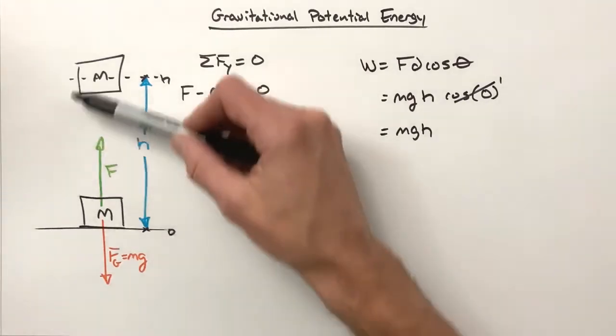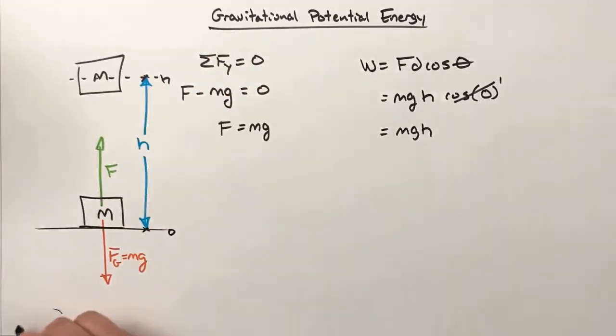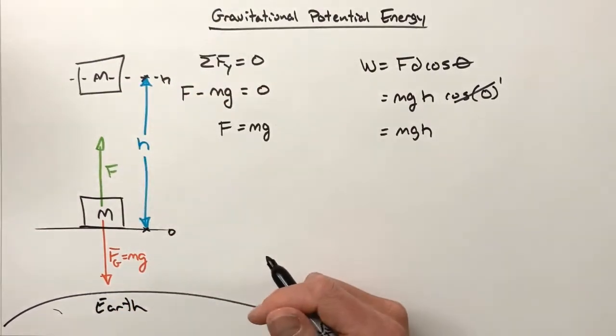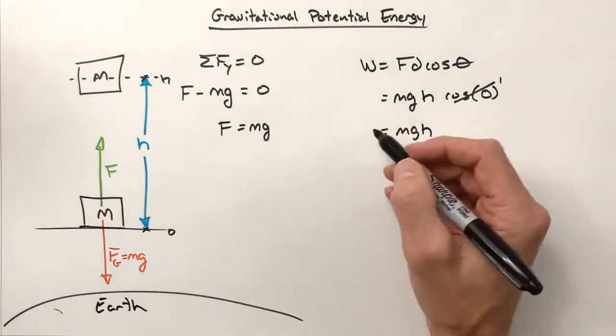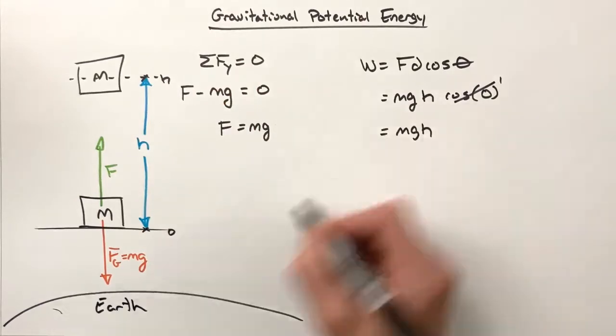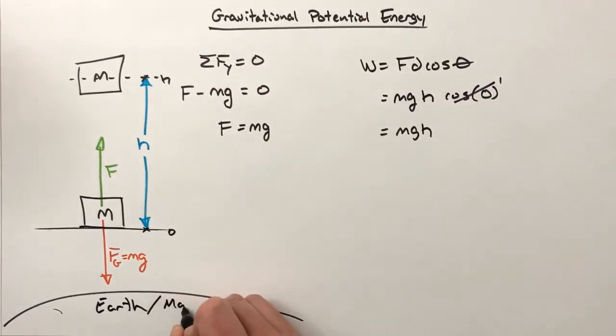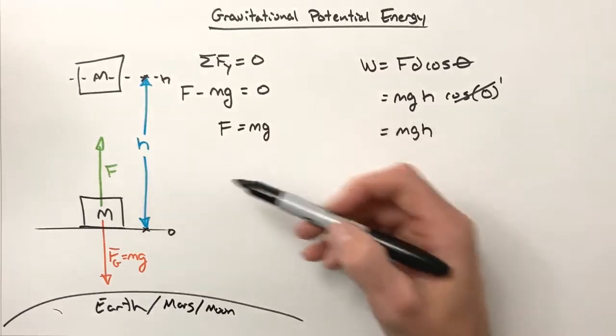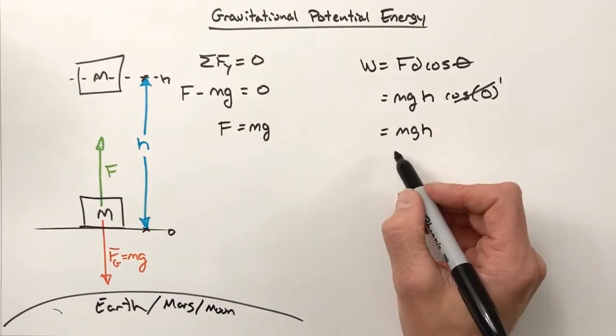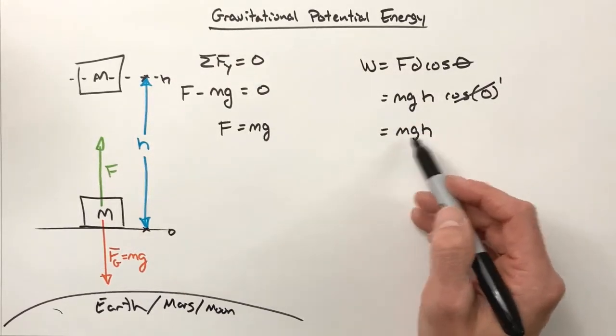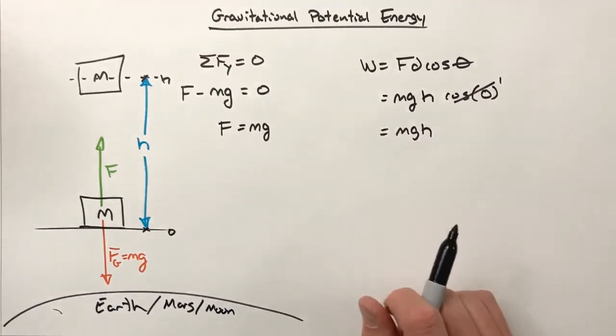What does that mean? Well, simplistically put, we've taken all this energy mgh and we've stored it in space - in the emptiness of space between this block and down here the Earth, assuming I'm not lifting this block somewhere in space like Mars, in which case this would be Mars, or the Moon, or wherever that kid from fifth period is from.